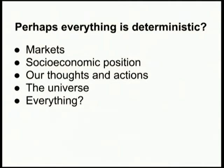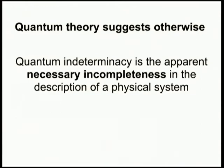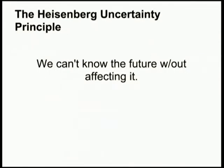Perhaps everything is determined — markets, socioeconomic position, our thoughts and actions, the universe. Quantum theory suggests otherwise; modern quantum thinking and a lot of philosophy and religion say things are not determined and there is a necessary incompleteness in our world. Also, we can't know about the future without affecting it, so you have this weird feedback loop. So even if things are determined, it's impossible for us to take advantage of that.